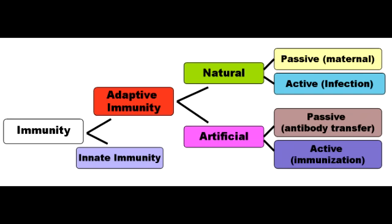Examples of active immunity include natural infections, vaccines, and toxoids. These are all different ways of acquiring active immunity, so if that pathogen is ever encountered again, the body will fight it without interruption because it has memory towards that pathogen.